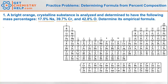Our first step is to assume 100 grams. That's nice because it just turns all of these percentages into grams. So 17.5% of a 100 gram sample would be 17.5 grams of sodium, 39.7 grams of chromium, and 42.8 grams of oxygen.